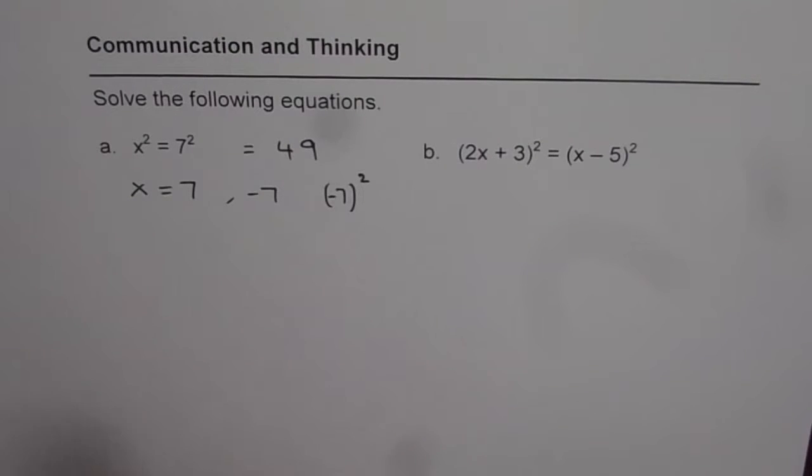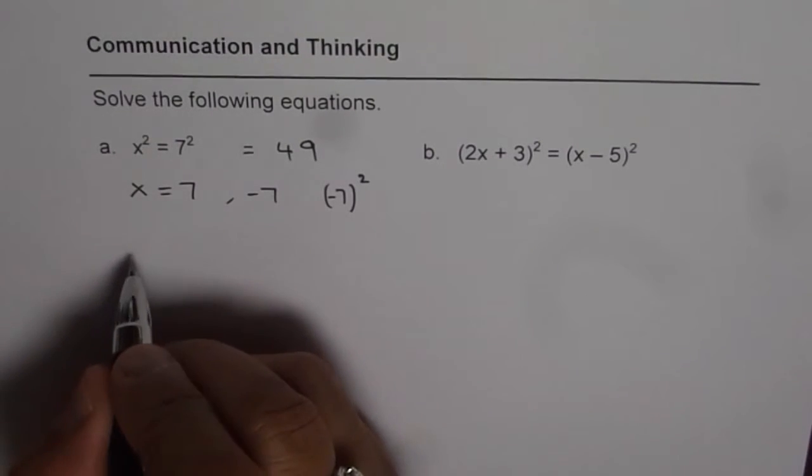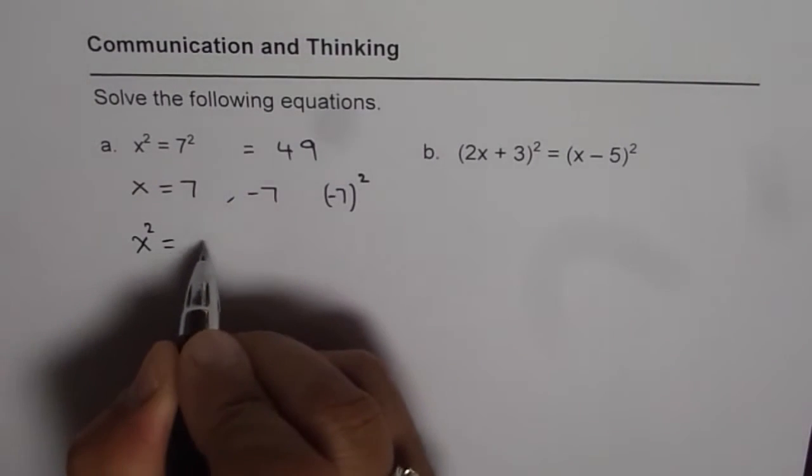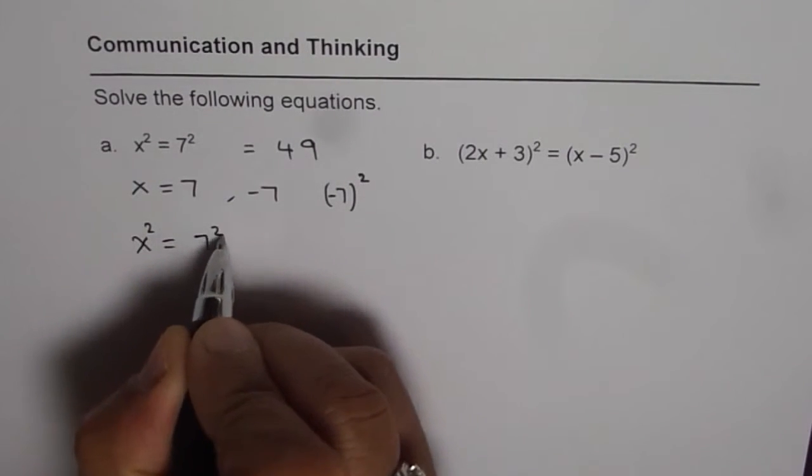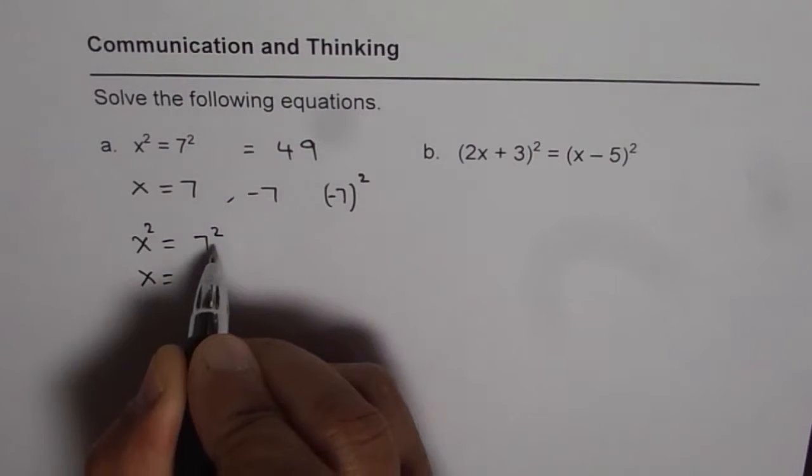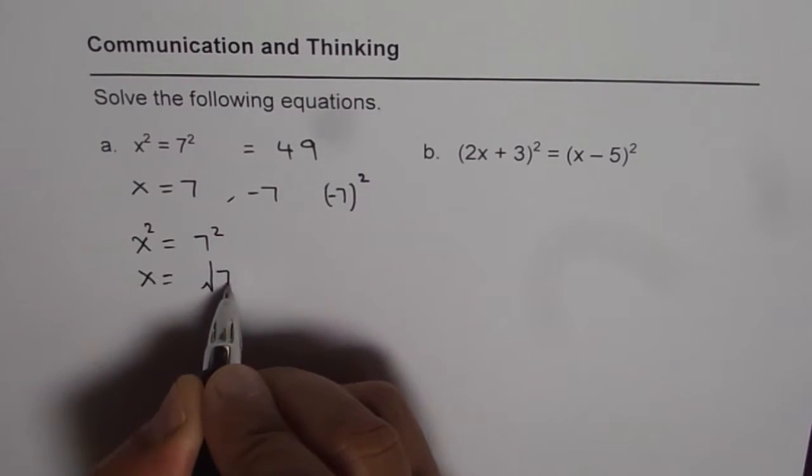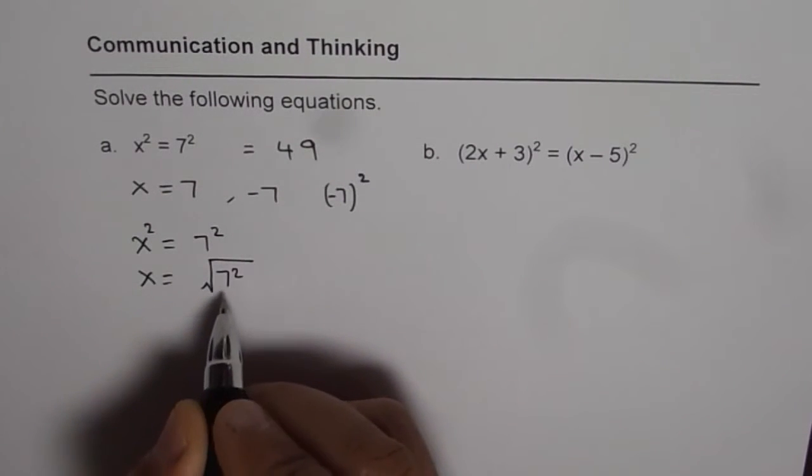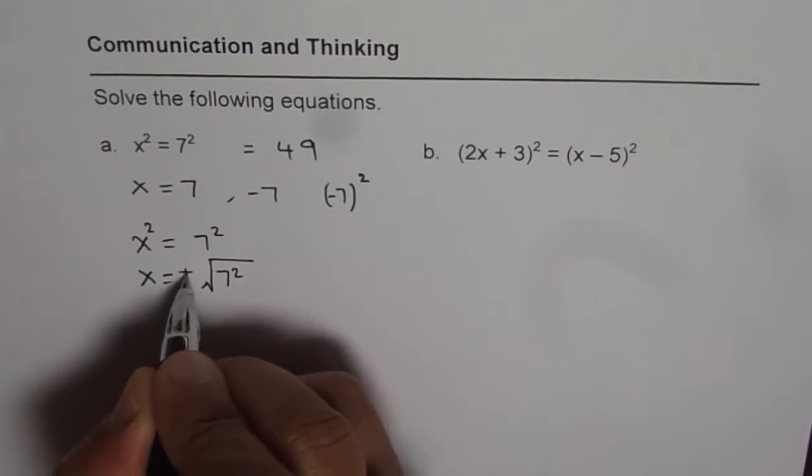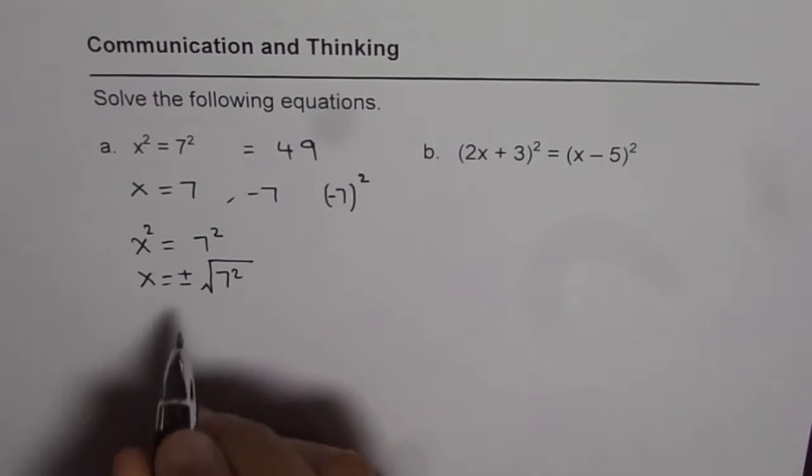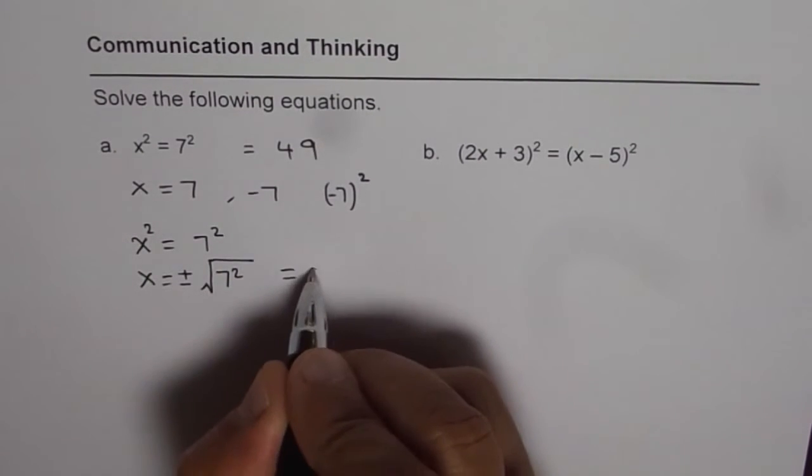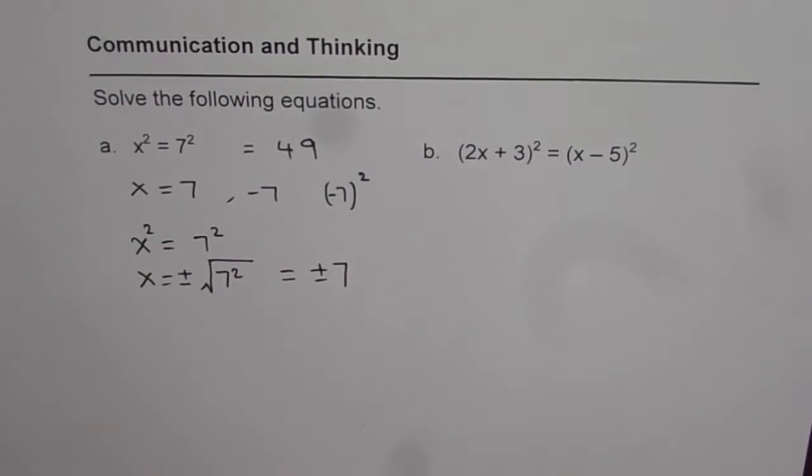One way is what we should do is if we have x squared equals to 7 squared then x is equal to square root of 7 squared. Whenever you do square root, you have to write plus and minus. And so you get two answers. Plus and minus 7. Do you see that? So you get two answers. That is one way of doing it. And that is indeed the correct way of doing it.